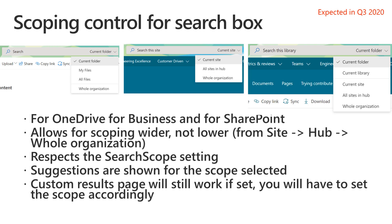There's a subtle line indicator that you're jumping out into another experience. If you're in OneDrive for Business and select whole organization and submit a search, we'll open a new tab and take you to the SharePoint start page for the enterprise search experience. Similarly, if you're in a folder or library in SharePoint Sites and switch to current site or all sites, we'll open a new tab to that site or hub search experience. Custom results pages will continue to work and always take you to the custom results page.